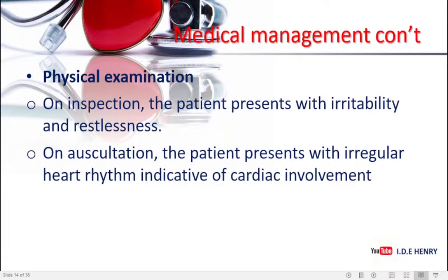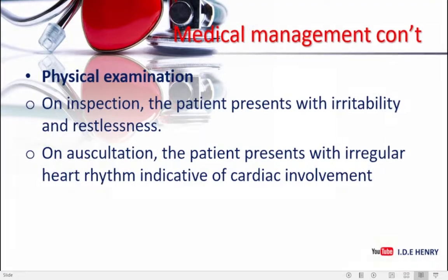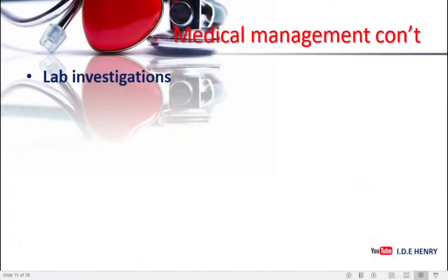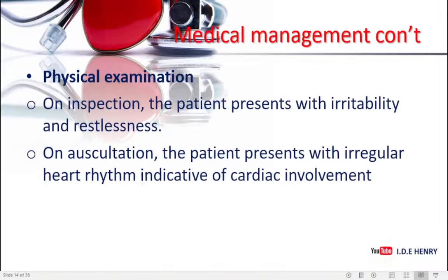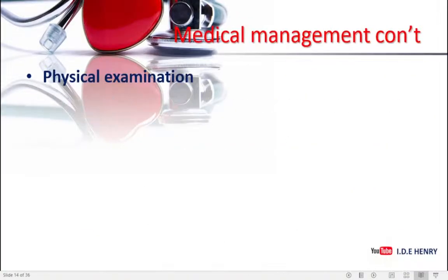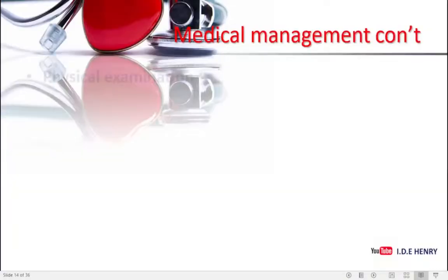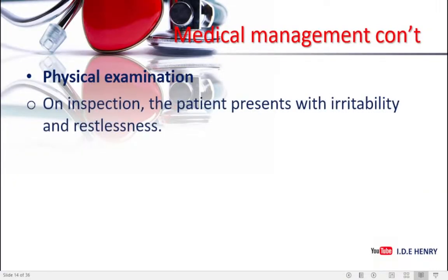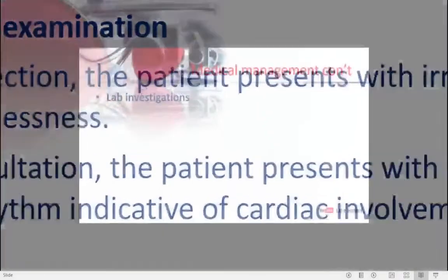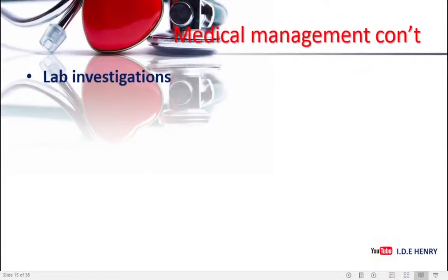Remember, in our pathophysiology we mentioned that in the heart it causes myocarditis. This impairs the heart's contractility, and that can cause irregular heart rhythms. Then we go to lab investigations. You write them exactly the way I have outlined them — you start with history taking, then you write physical examination, then on inspection, on auscultation and what it will review. Then you write another heading which is lab investigation.